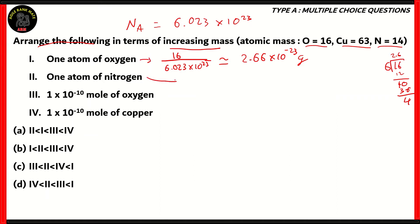What about 1 atom of nitrogen? The mass is 14, so it'll be 14 over 6.023 into 10 raised to 23. Do the calculations, 14 over 6, gives you 2.33 into 10 raised to minus 23 grams. That's the mass of 1 atom of nitrogen.